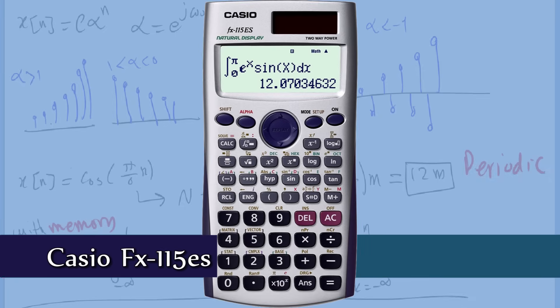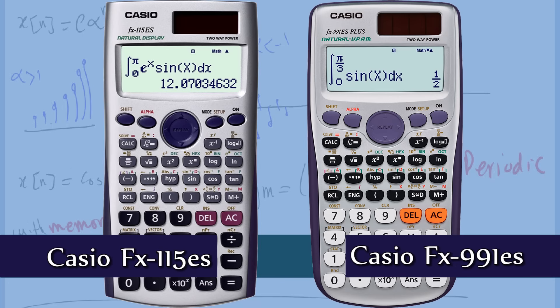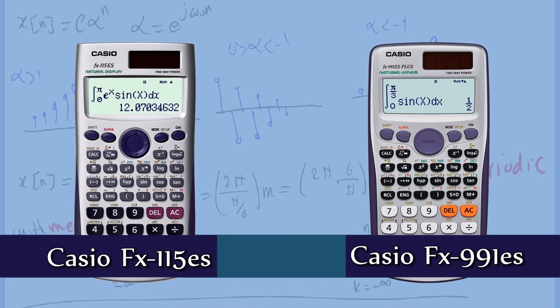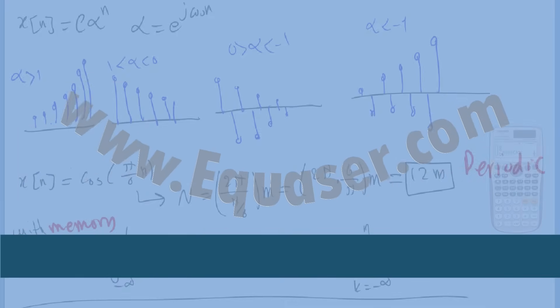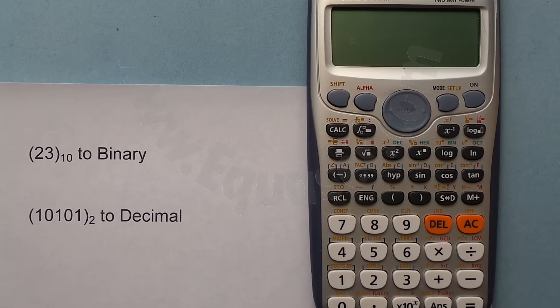This tutorial covers the Casio fx-115ES and Casio fx-991ES Plus C calculators. We're going to use them to convert binary, decimal, and hexadecimal from one to the other.